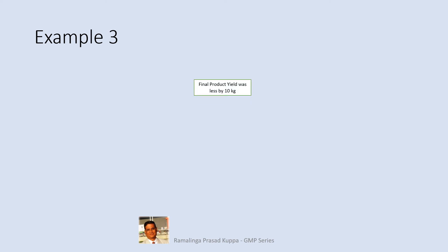Third example: final product yield was less by 10 kilos — a case of less yield in product output. This can happen from a cause anywhere in the process. The product output was 10 kilos less than the standard. The next level of investigation includes checking the quality of input materials and process-related factors. Check whether all inputs were tested and approved by QC. If no, continue the FTA-type investigation with a different branch with this aspect on the top of the tree.